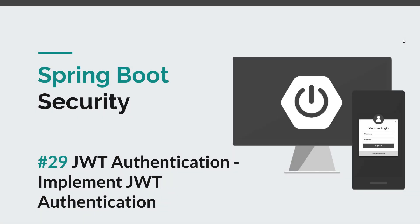Hi everyone, and welcome back to episode 29 of the Spring Boot Security course. Today we are going to implement the JWT authentication filter. It's the first step that we need in order to configure Spring Security to work with JWT. Before we get started and write some code, I'd like to remind you to hit the like button and subscribe to this channel to stay tuned for more courses that will sharpen your programming skills.